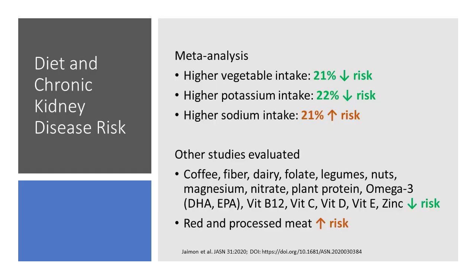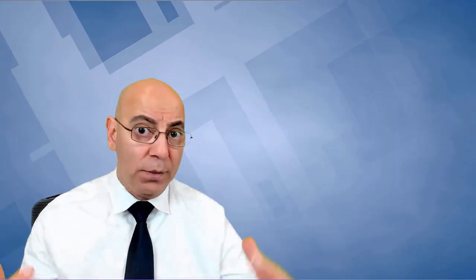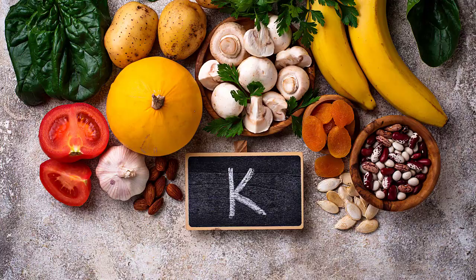Well, a number of things, starting with nutrition. What they found was if you had higher intakes of vegetables, your risk of developing kidney disease was lower by 21%. Same thing with potassium. Your risk was 22% lower. And if you're wondering what has potassium, well, a whole foods plant-based diet. Fruits and vegetables are rich sources of potassium. So the more you follow a whole foods plant-based diet, the richer your source of potassium is.